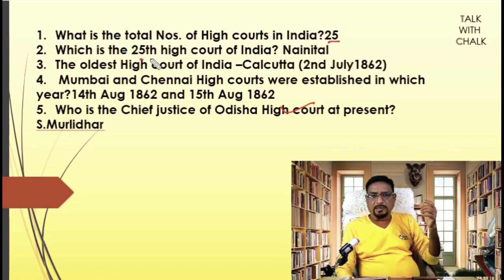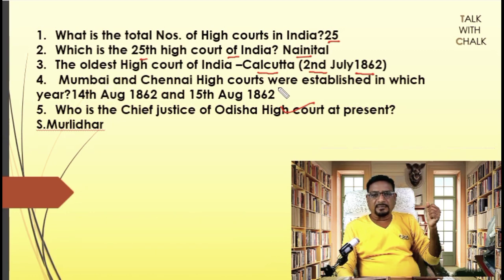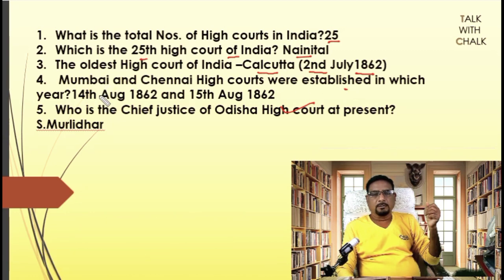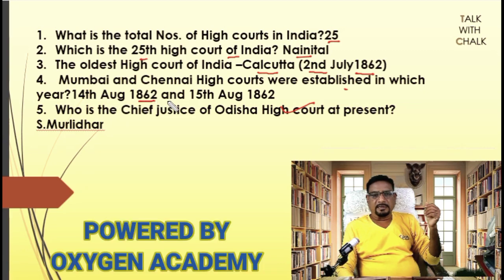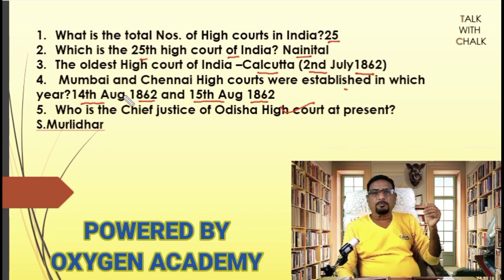Which is the 25th High Court of India? It is Nainital in Uttarakhand. The oldest High Court of India is the Kolkata (Calcutta) High Court, established on 2nd July 1862. Mumbai and Chennai High Courts were also established in 1862, on 14th August and 15th August respectively — but Kolkata started earlier.